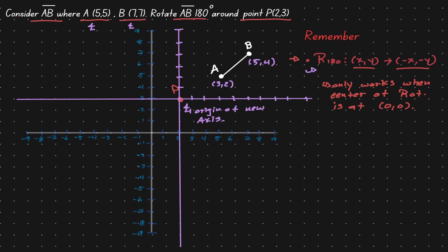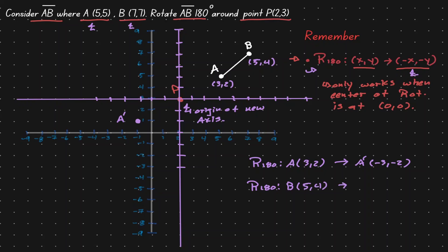A rotation of 180 degrees on our new point A at (3, 2): according to our rule, we just need to change the sign of x and the sign of y, so it becomes (negative 3, negative 2). Let's place that down at (negative 3, negative 2). Now let's compute for point B. Point B, after a rotation of 180 degrees on our new axis, gives the coordinate point (negative 5, negative 4). Let's place that down in our new axis and connect our points.